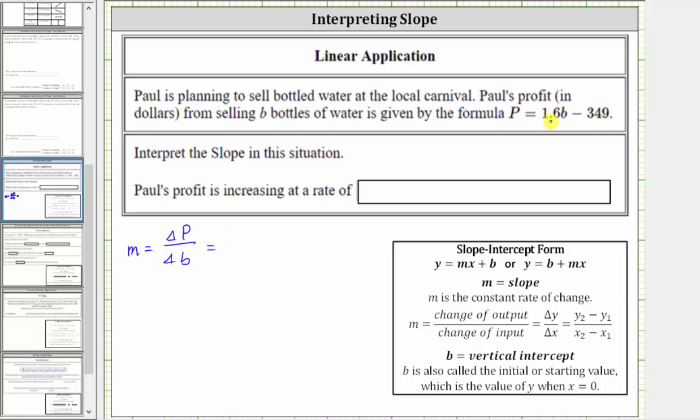We need 1.6 to be a fraction, so we write 1.6 as a fraction with a denominator of one, and then we include units. So the change in profit would be in dollars. This is 1.6 dollars. And the change in b represents the change in the number of bottles sold, so this represents one bottle.